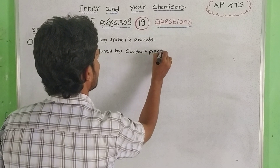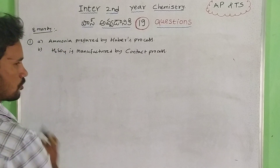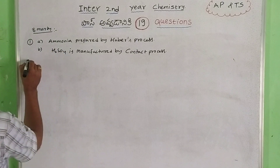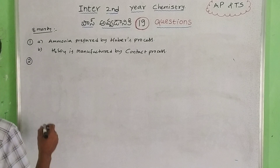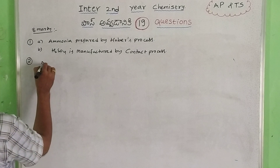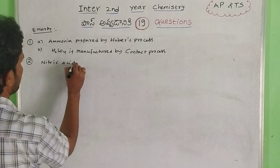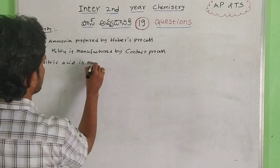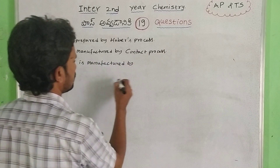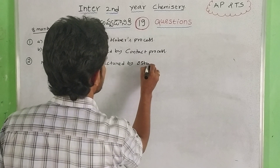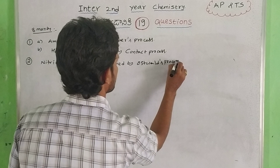This is the Contact process preparation. The next process is nitric acid preparation — nitric acid is manufactured by Ostwald's process.